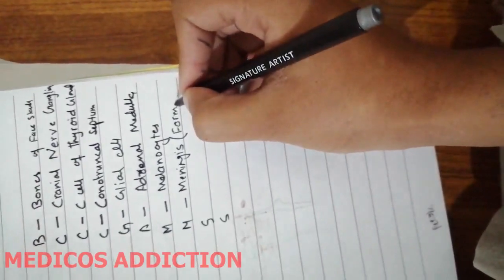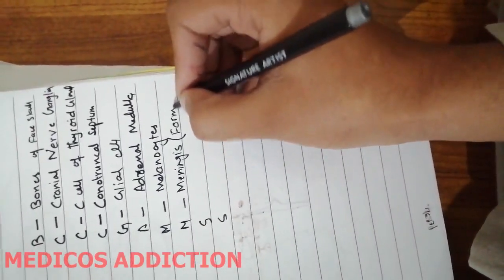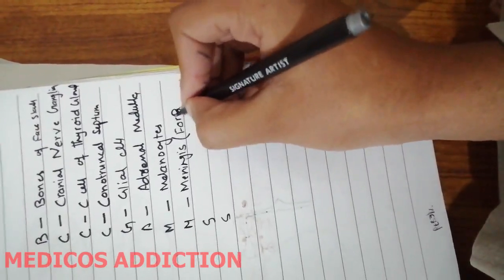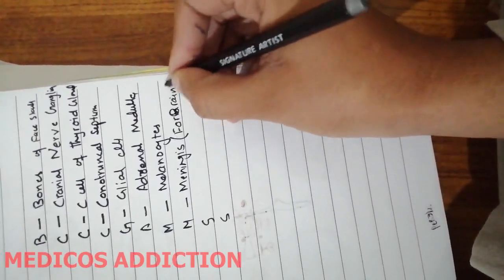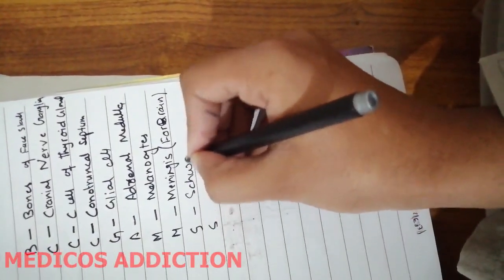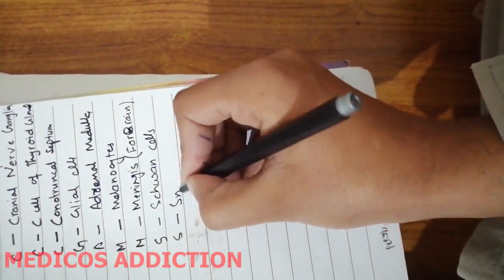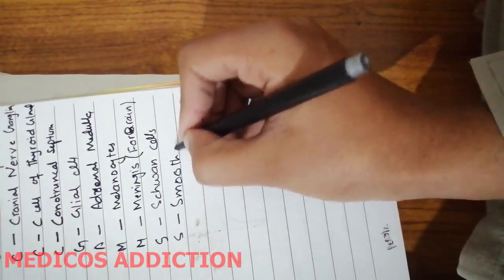But remember, these are the meninges of forebrain, not spinal cord, because meninges of spinal cord are derived from the mesenchyme which surrounds the neural tube. S for Schwann cells, and this S for smooth muscle which surrounds the blood vessels.